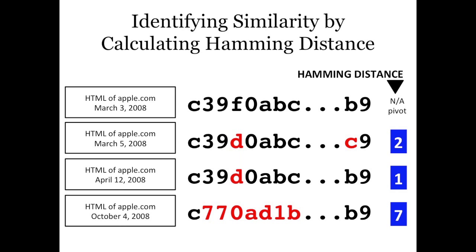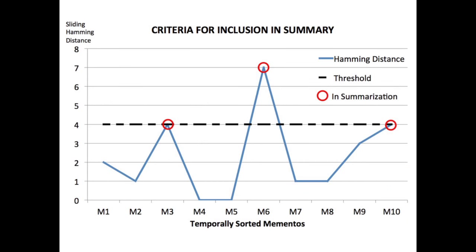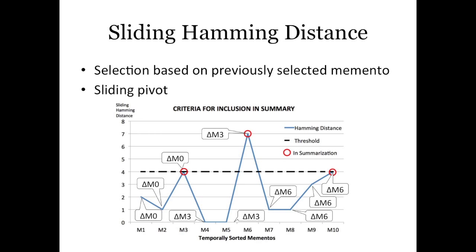So we would include March 3rd, 2008 and October 4th, 2008, and any others that pass the Hamming distance threshold. To visualize this: whenever the Hamming distance passes the dotted threshold line using a sliding pivot basis, it is included. Memento 3 would be included, then everything subsequent uses memento 3 as its new pivot, giving us mementos 3, 6, and 10. Everything prior to memento 3 is based on the initial pivot. Since we need a pivot to calculate the Hamming distance, we include the first memento as well.